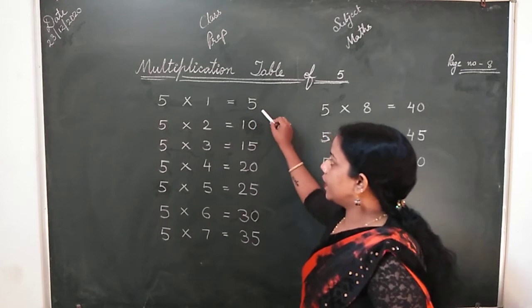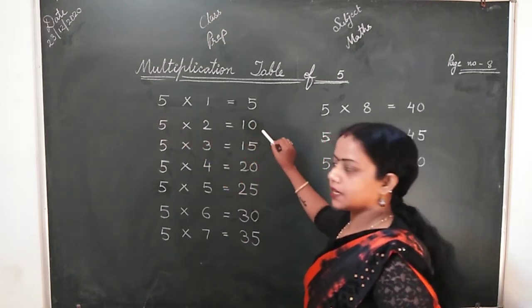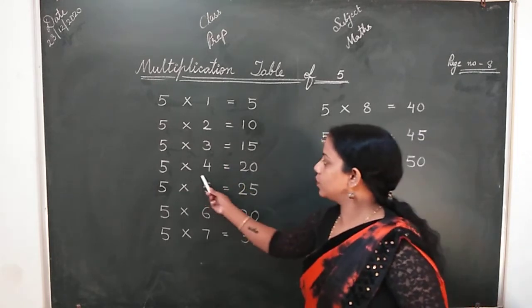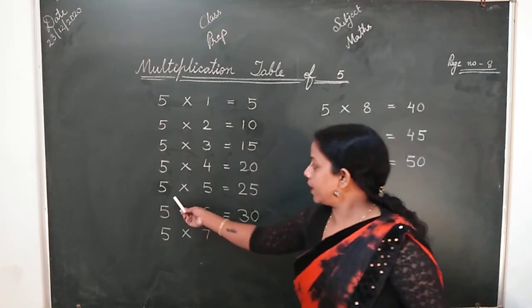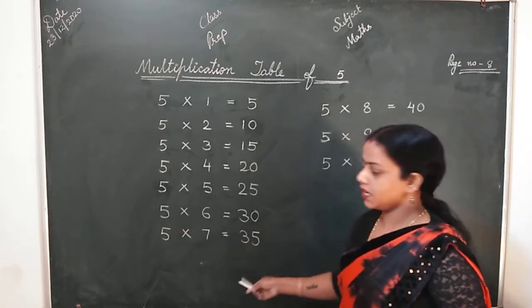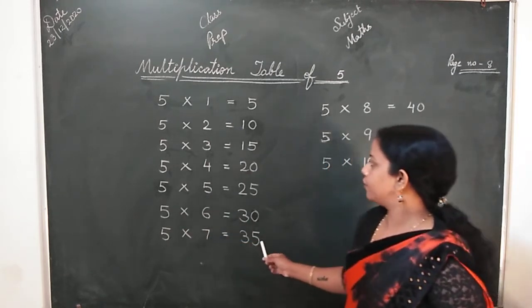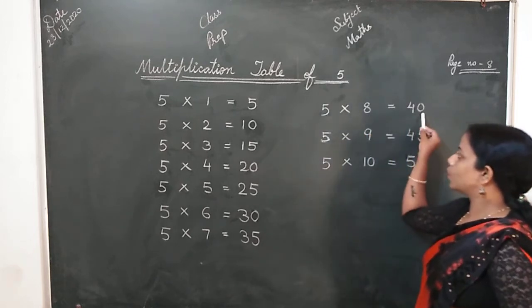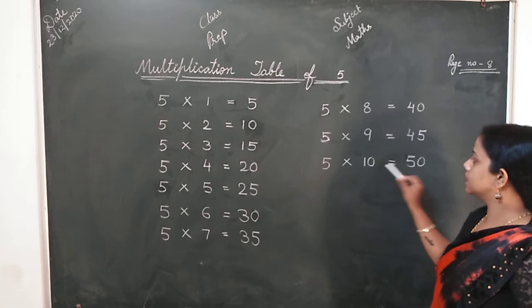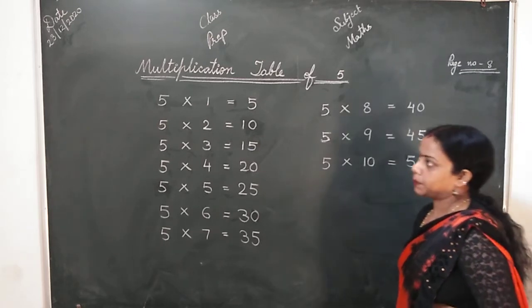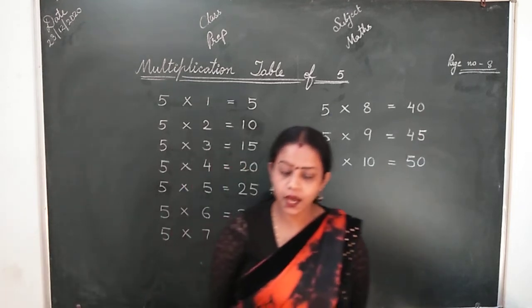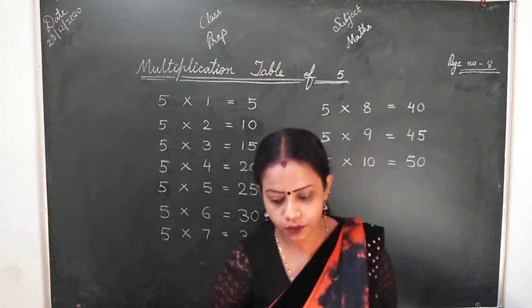5, 1s are 5. 5, 2s are 10. 5, 3s are 15. 5, 4s are 20. 5, 5s are 25. 5, 6s are 30. 5, 7s are 35. 5, 8s are 40. 5, 9s are 45. 5, 10s are 50. Isse pehle hai hai 2, 3 aur 4 ki table bhi ki thi. I hope aap sab ne learn kar li hogi.